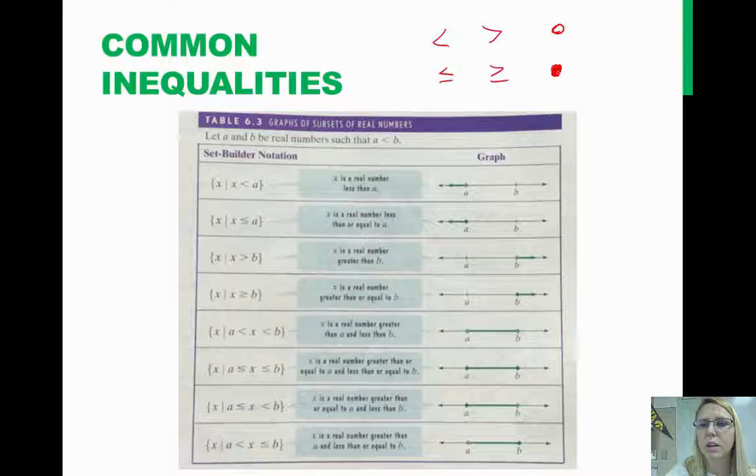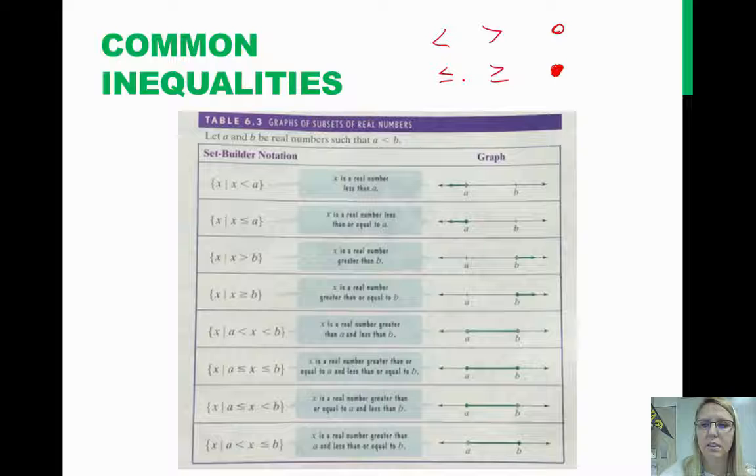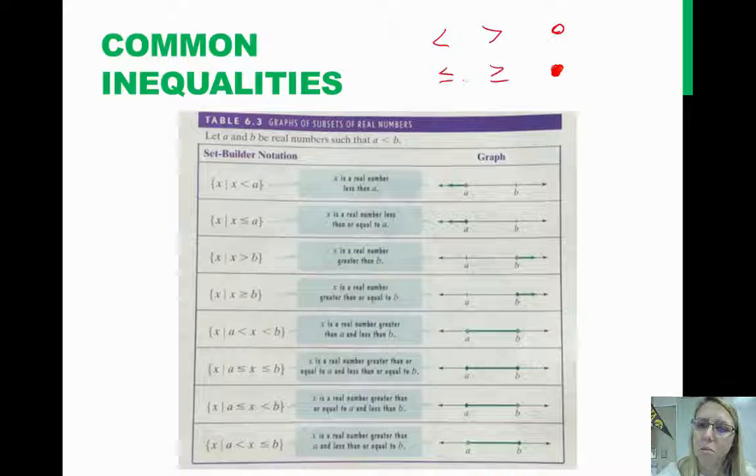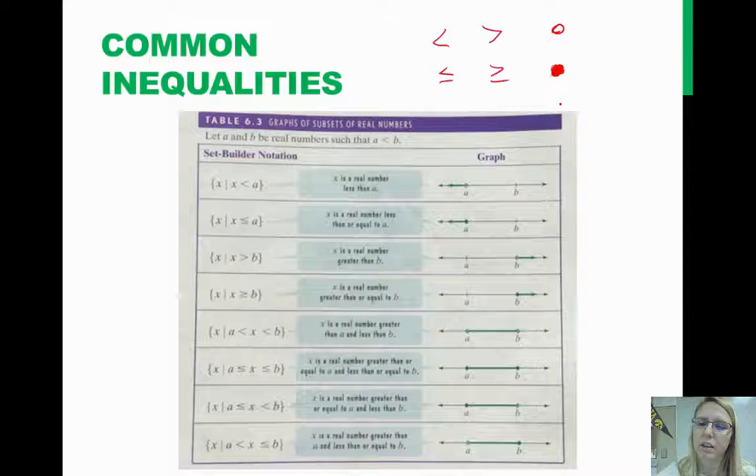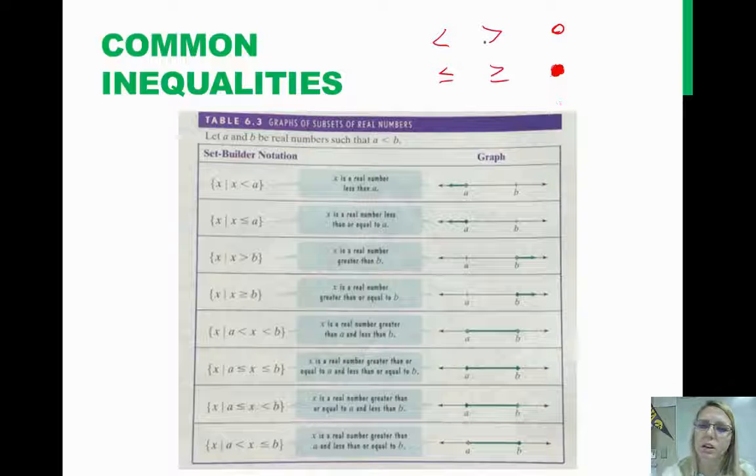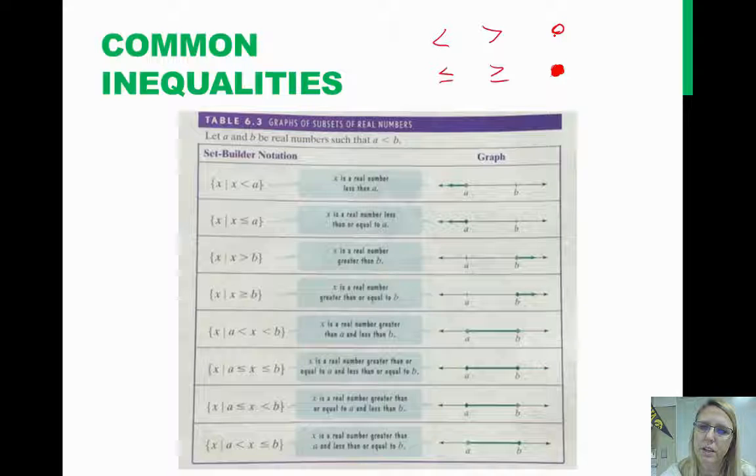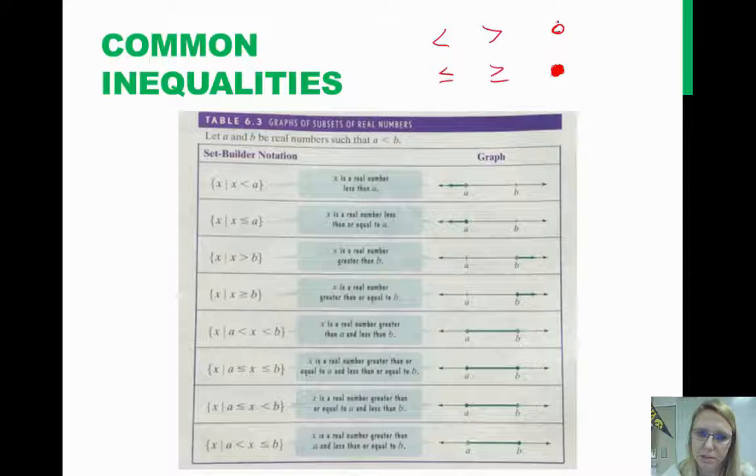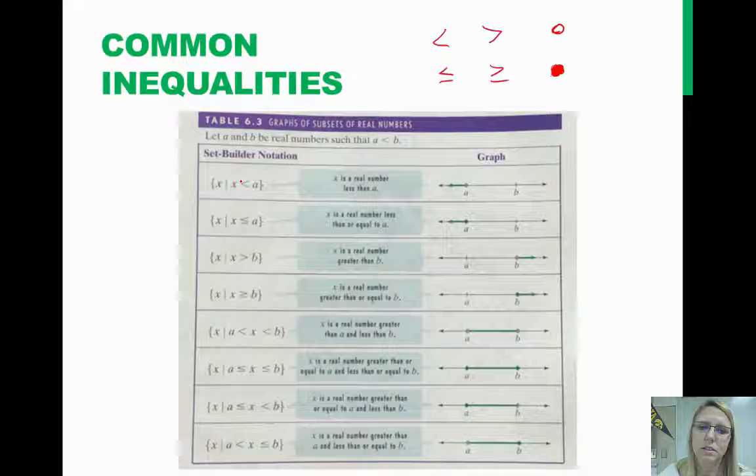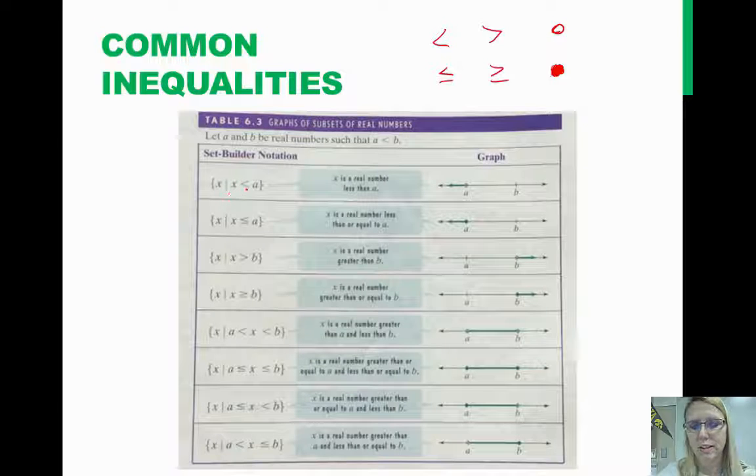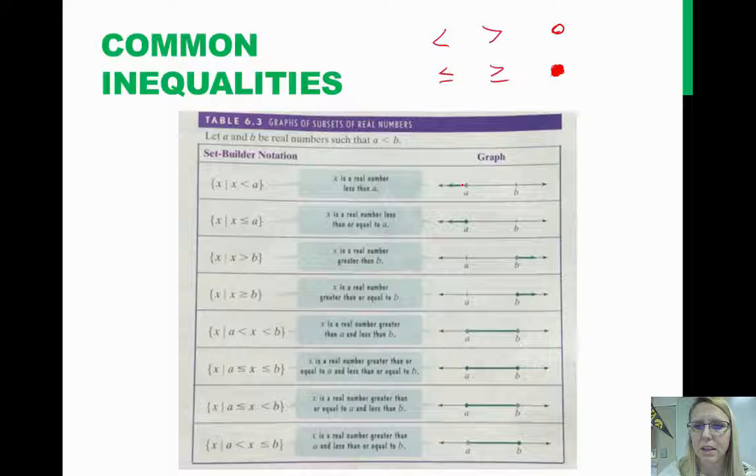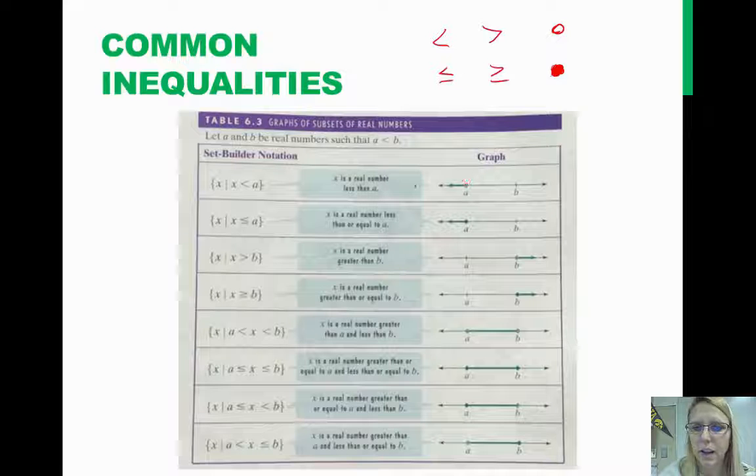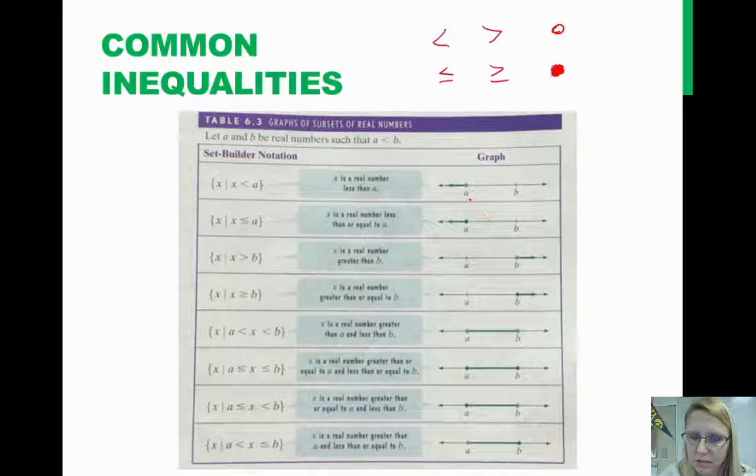And the reason is, if you think about it, this includes an equal, that line underneath. And when it does, that means that number is included in the solution. Here, it doesn't have an equal, so the number, it starts from that number, but that number is not included. So like this one, x such that x is less than a. That means everything on the number line less than a is what x could be, but a itself is not. And it's hard to see from this, but that is an open circle.